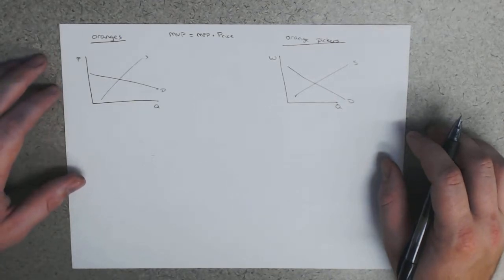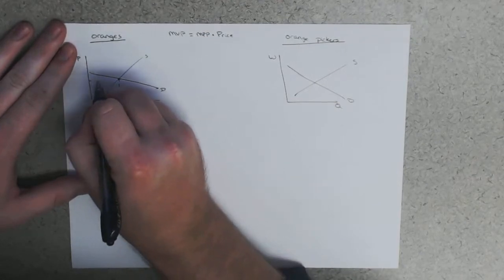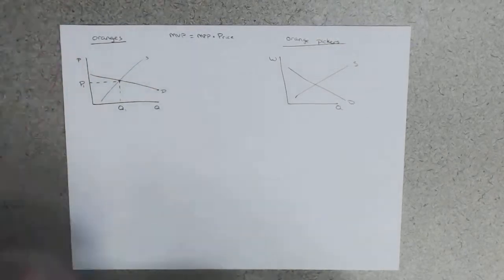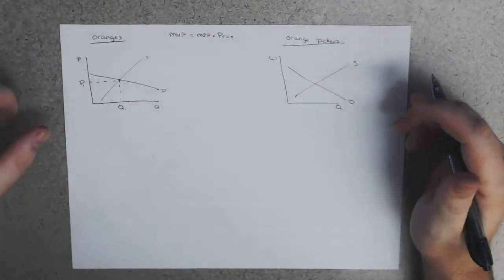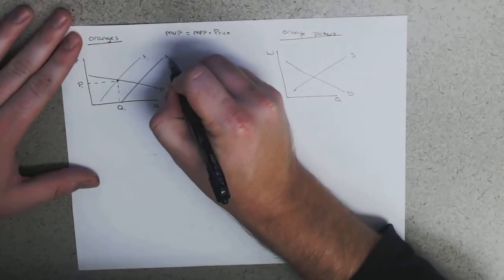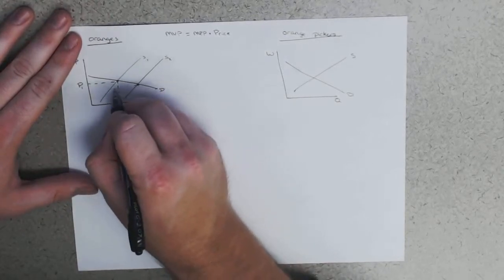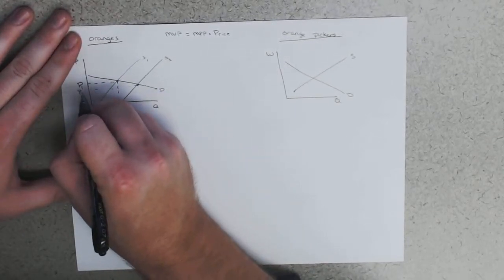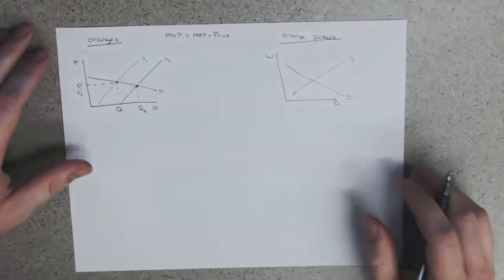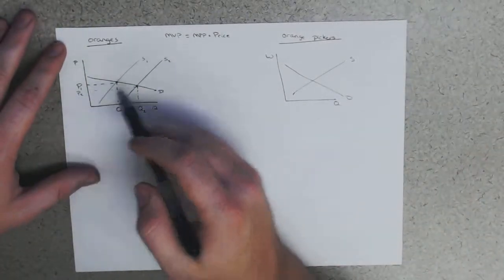So this one person's wage would go up. Supply wouldn't change hardly at all. But let's say that every orange picker is now all of a sudden more productive. What happens to the number of oranges sold? Well, obviously, if we have an increase in technology, that's going to increase supply.